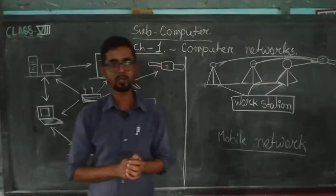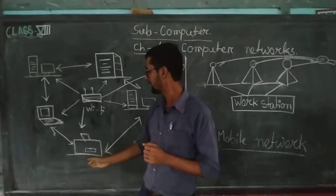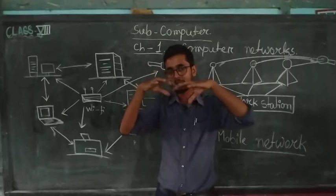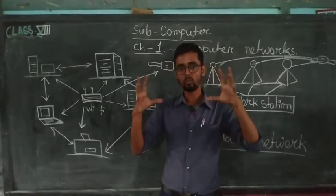That is computer network. So, that means, in a computer network, there are so many devices like desktop, laptop, Wi-Fi, printer. Again, main server room. So, these all are also interconnected to each other. That is why it is called network.